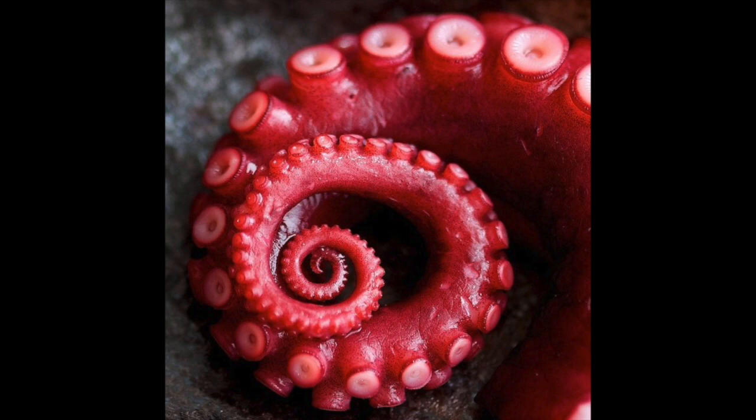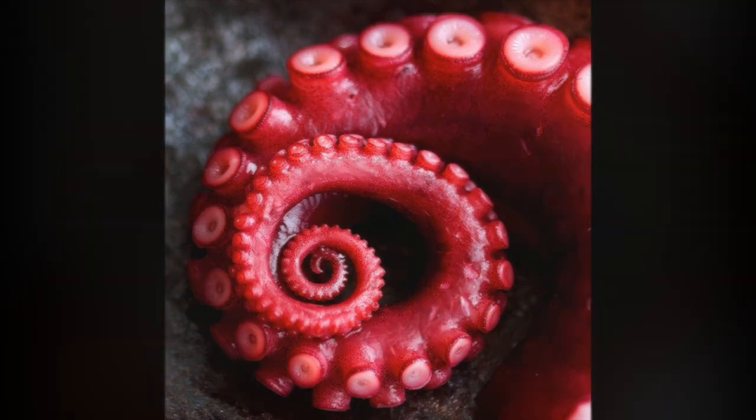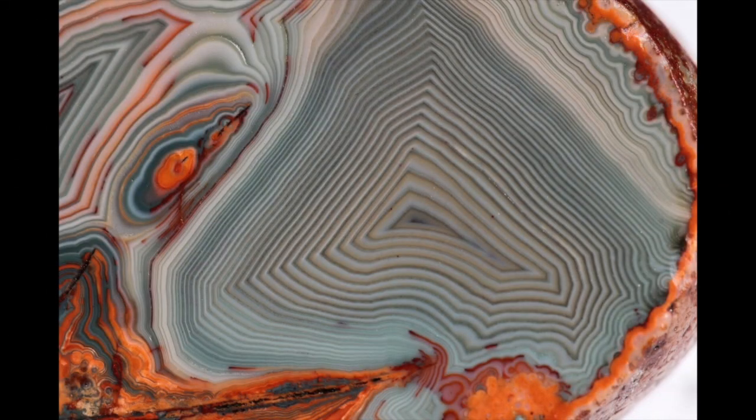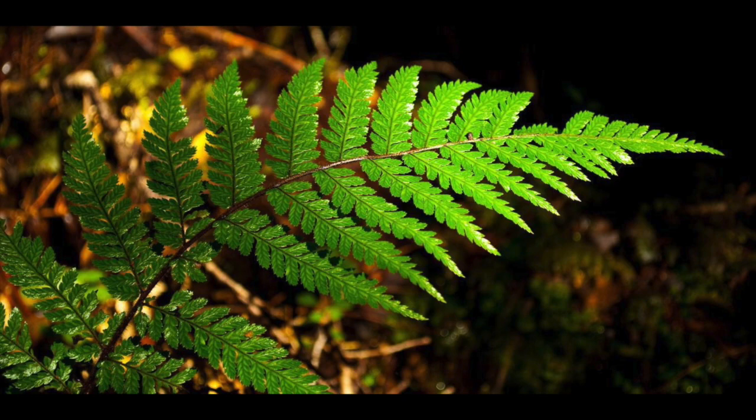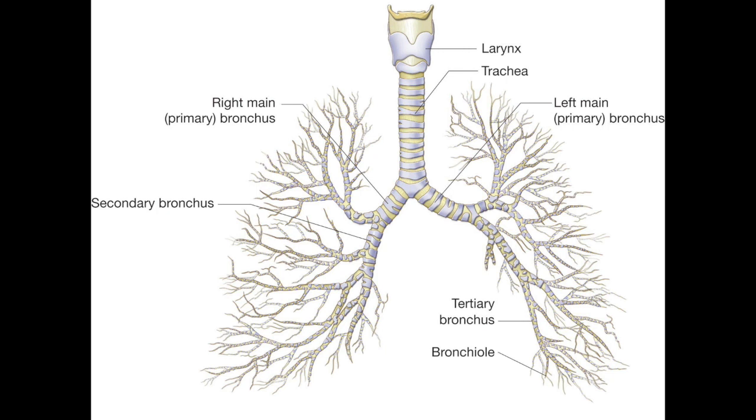You see this octopus tentacle — just like the shell, it starts small in the center and spirals out, with the same pattern repeated over and over again. The same is true with this rock formation: in the center it has a similar shape that repeats. See how the leaves on this fern repeat over and over again. Fractals are found in tree branches — if you take one part of a branch you'd see it's very similar to the larger branches, because tree branches are fractal in nature.